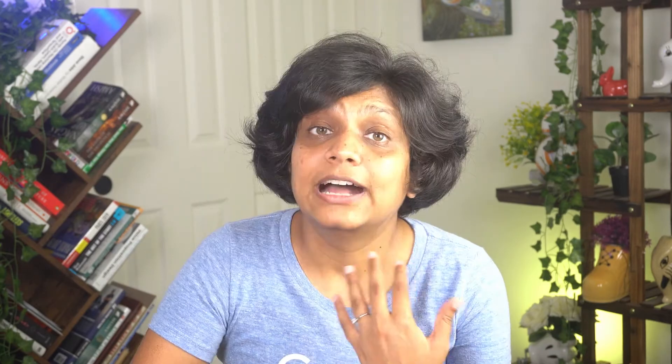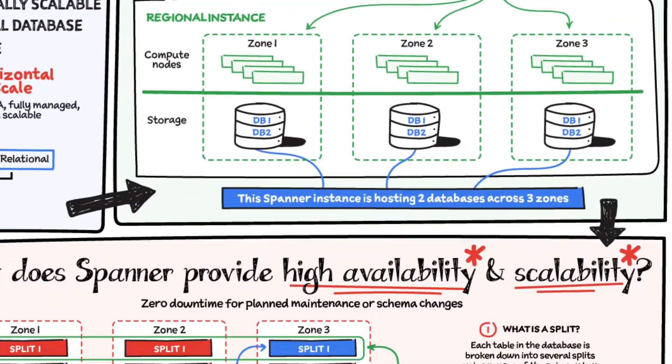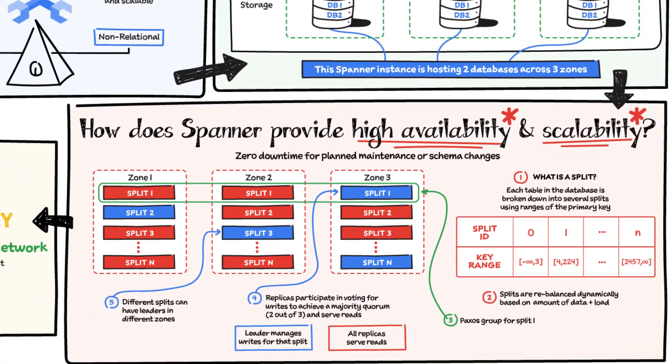If a node or a zone fails, the database remains available, being served by the remaining nodes. No manual intervention is needed to maintain this availability.